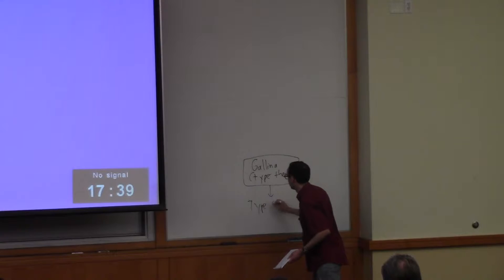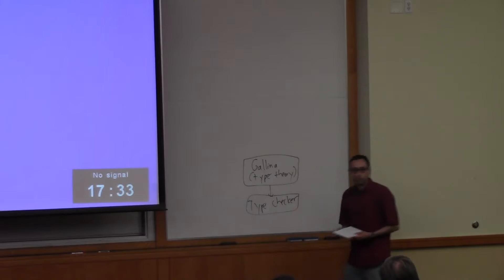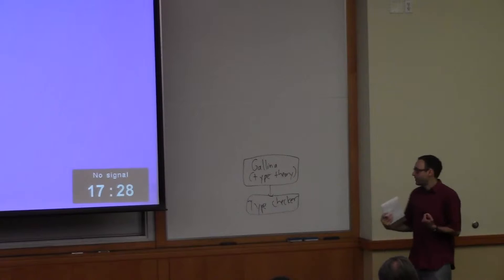And there is a type checker which is going to tell you whether your programs type check and via the Curry-Howard isomorphism the correctness or convincingness of a proof is identified with the fact that a certain term type checks so this type checker is the most important piece that tells us when an argument is convincing.